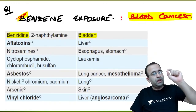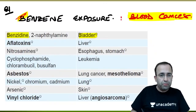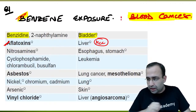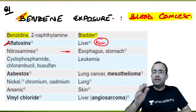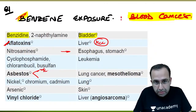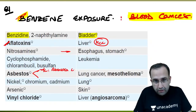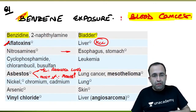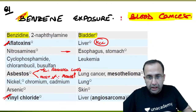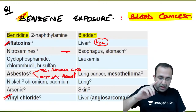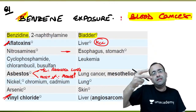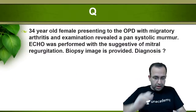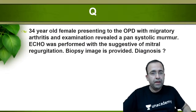You need to have slightly more information about the same. Aflatoxins are associated with liver cancer — HCC, hepatocellular carcinoma. Nitrosamines are associated with esophagus and stomach. Asbestos: most common malignancy is adenocarcinoma of lung; most specific malignancy is mesothelioma. Vinyl chloride is associated with angiosarcoma. Benzene — blood cancer; benzidine — bladder cancer.